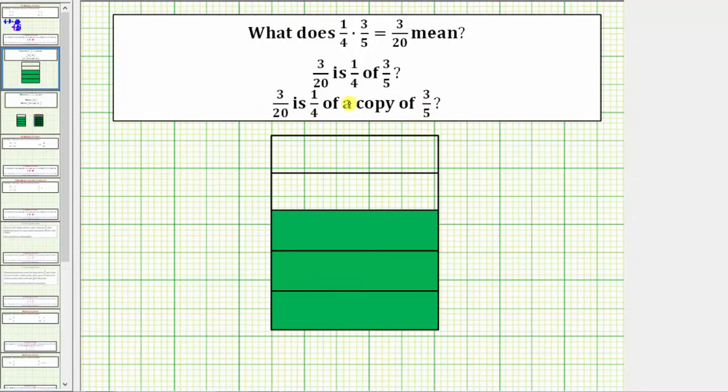Let's go ahead and model this. If we define the rectangle as one whole, here's the model for 3/5. So if we want 1/4 of this amount, we would partition this into 4 equal parts or pieces. So let's go ahead and partition this vertically. So we'll cut this in half, and then in half again.